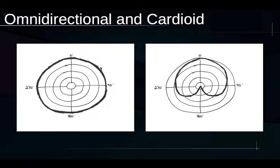The zero degree direction is also often called the on-axis direction for the microphone, and as we go around the circle further and further away from the on-axis direction, we can say we're going increasingly off-axis. The graph on the left is the omnidirectional microphone. The thick line is at the same distance from the center all the way around, reflecting the fact that omnidirectional microphones are equally sensitive in all directions.